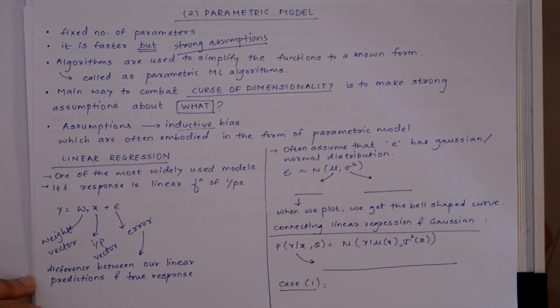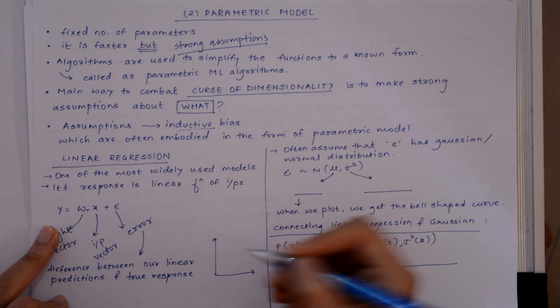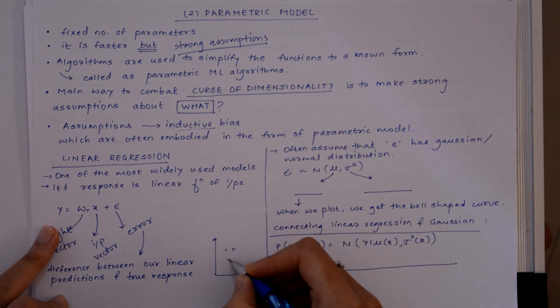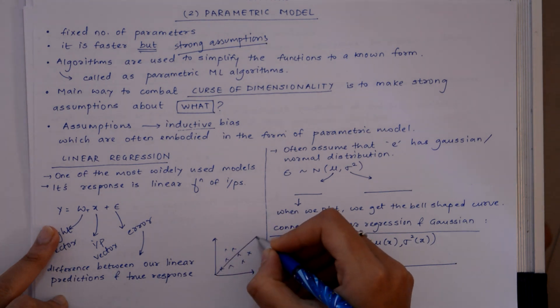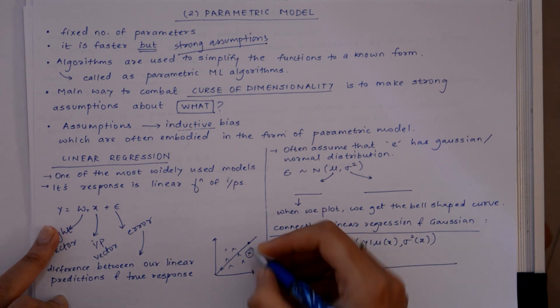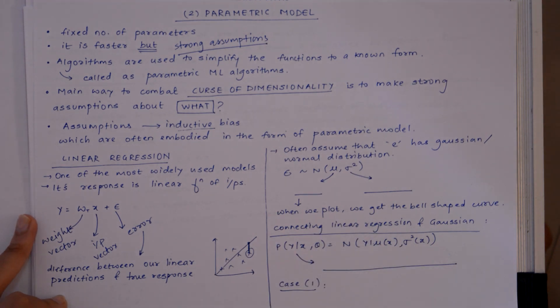In this case, the error is the difference between our linear predictions and true response. Suppose we have some distribution this way, and this is what we have predicted and this is our true response. So the difference between them is called error.